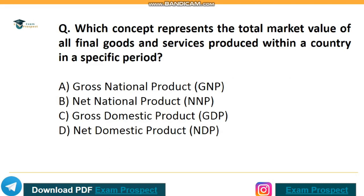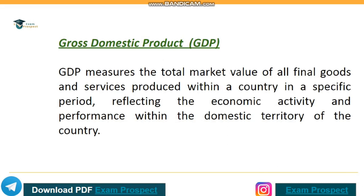Which concept represents the total market value of all final goods and services produced within a country in a specific period? Correct answer: option C, Gross Domestic Product (GDP). GDP measures the total market value of all final goods and services produced within a country in a specific period, reflecting the economic activity and performance within the domestic territory of the country.